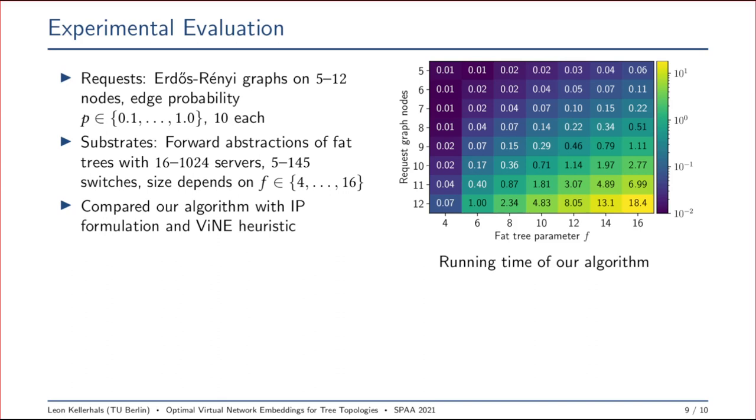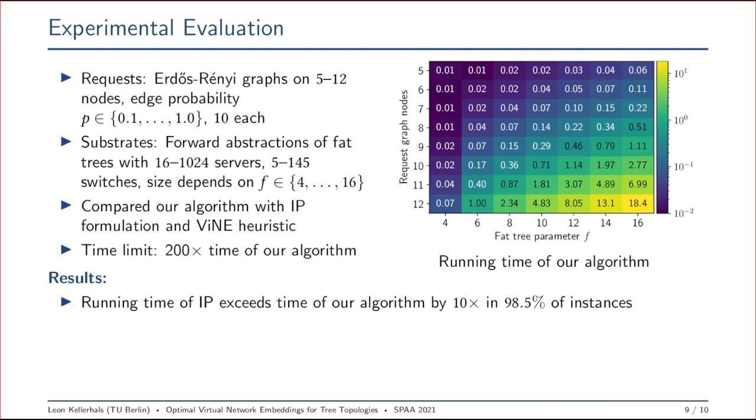For the IP, we set the time limit to be 200 times the time that our algorithm needed on the same instance. We could observe that the IP formulation is slower than our algorithm by a factor of at least 10 in almost all of the instances. For some instances, the IP wasn't even able to find an initial feasible solution within the time limit. Further, we observed that the integer programming algorithm had most problems whenever the request graphs were very dense or had a very high edge probability. This is an area where our dynamic programming algorithm is basically immune to. It doesn't really care about the density of the request graph.